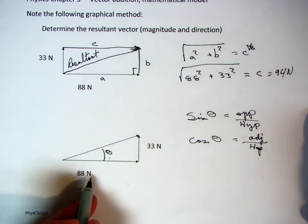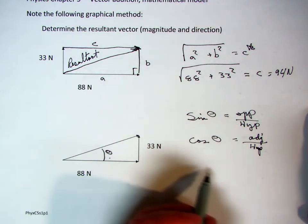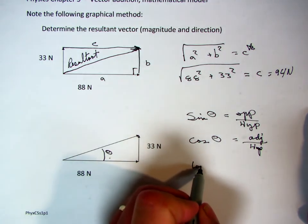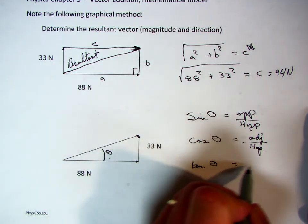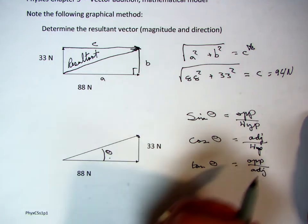In this instance, we've got the opposite and the adjacent, but no hypotenuse, so neither one of those could be used. But we remember that tangent of theta is equal to the opposite value over the adjacent value.